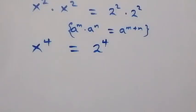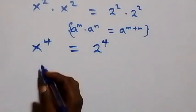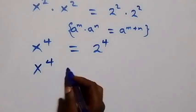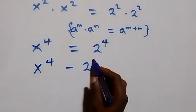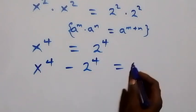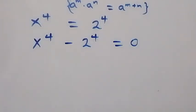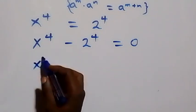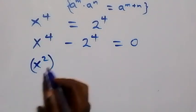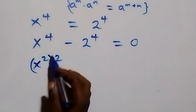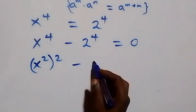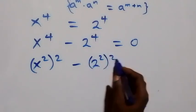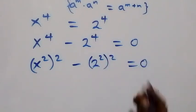We take two raised to power 4 to the left hand side, giving us x raised to power 4 minus two raised to power 4 equals zero. This can be rewritten as x squared, squared minus two squared, squared equals zero.